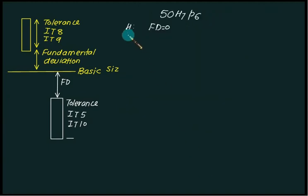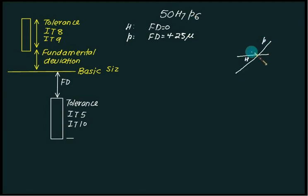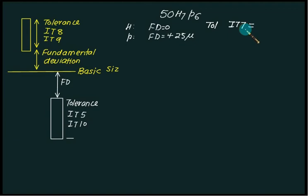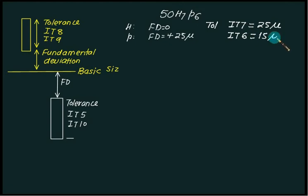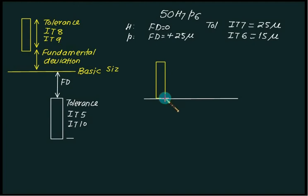Consider the example 50 H7 P6. The basic size is 50 mm. Capital H gives fundamental deviation for hole equal to 0. P is the fundamental deviation for the shaft. Since letter P comes after small h, it has a positive fundamental deviation — let's assume 25 microns. IT7 corresponds to a tolerance of 25 microns, and IT6 corresponds to 15 microns. We draw the basic size line at 50 mm and then construct the hole with fundamental deviation equal to 0, exactly touching the basic size.